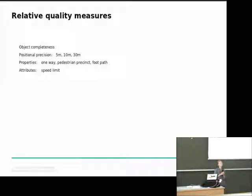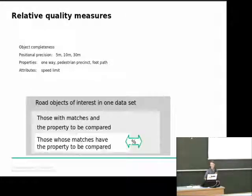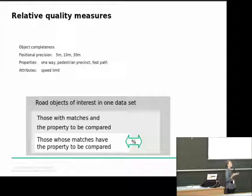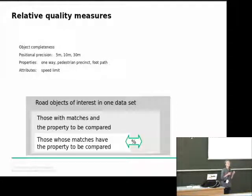We computed relative quality measures for object completeness, for positional precision — meaning whether the matching partners lie within a 5, 10, or 30 meters buffer — then existence of properties like one-way, pedestrian precinct, and footpath, and then the speed limit attribute. The approach is always the same: we choose a set of objects in one dataset, consider the subset that has matches and has the property we want to evaluate, then consider the subset where the matching partner also has that property, and we get a percentage.